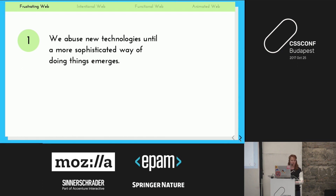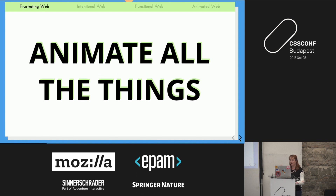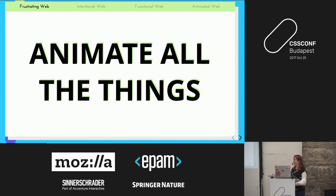I think there are two things that happen. The first is that we abuse new technologies until a more sophisticated way of doing things emerges — we like the shiny brand new things. I'm definitely guilty of this: when CSS animations were starting to get supported I was like 'animate all the things!' But the problem was people weren't coming to my sites to look at cool animations — they were there to do a thing, and I was getting in the way.